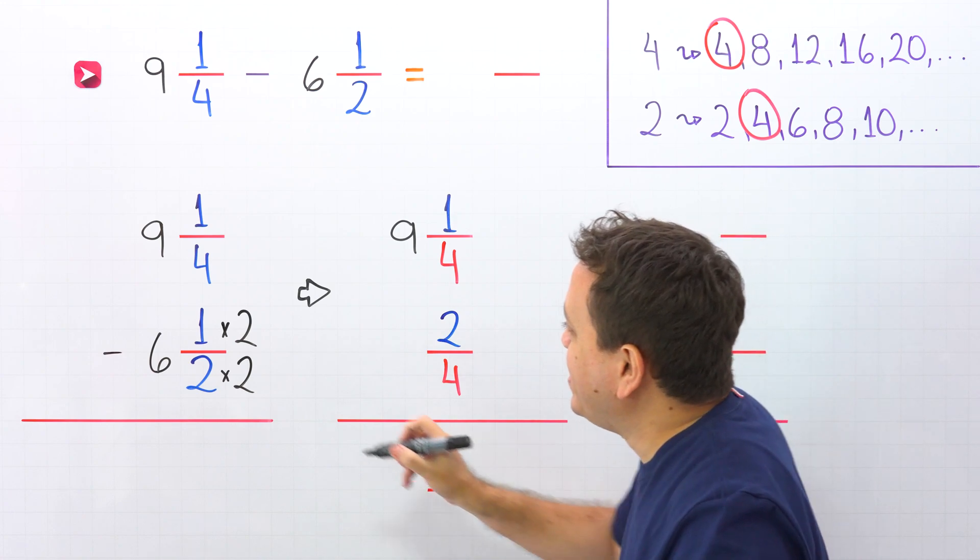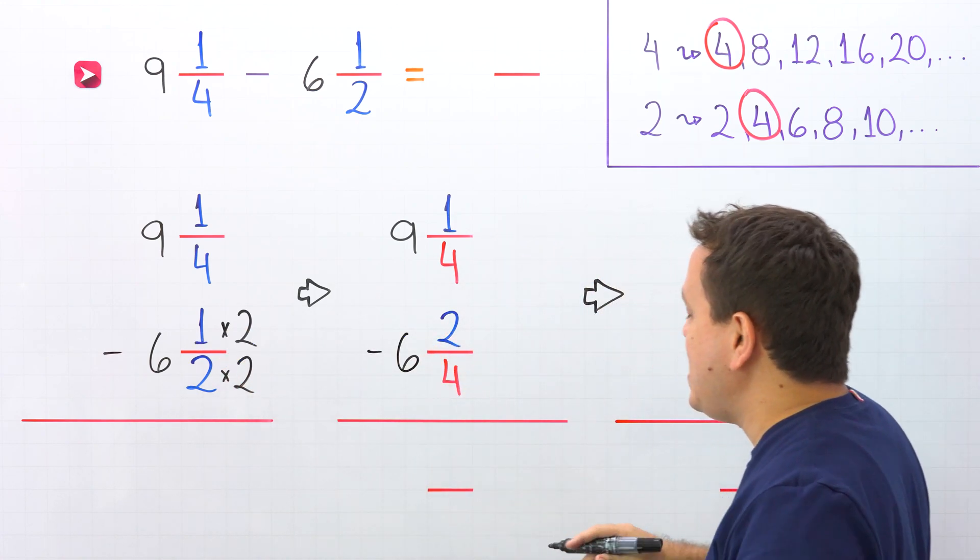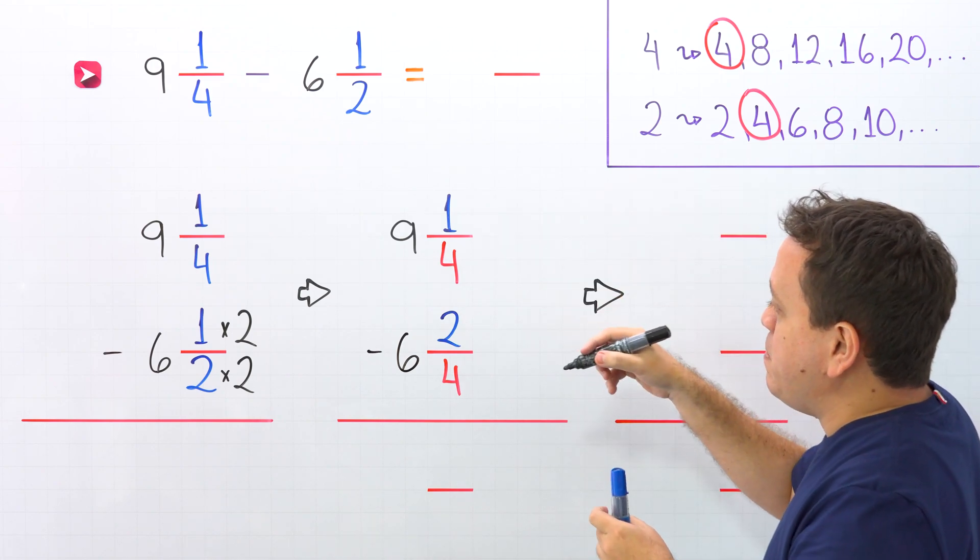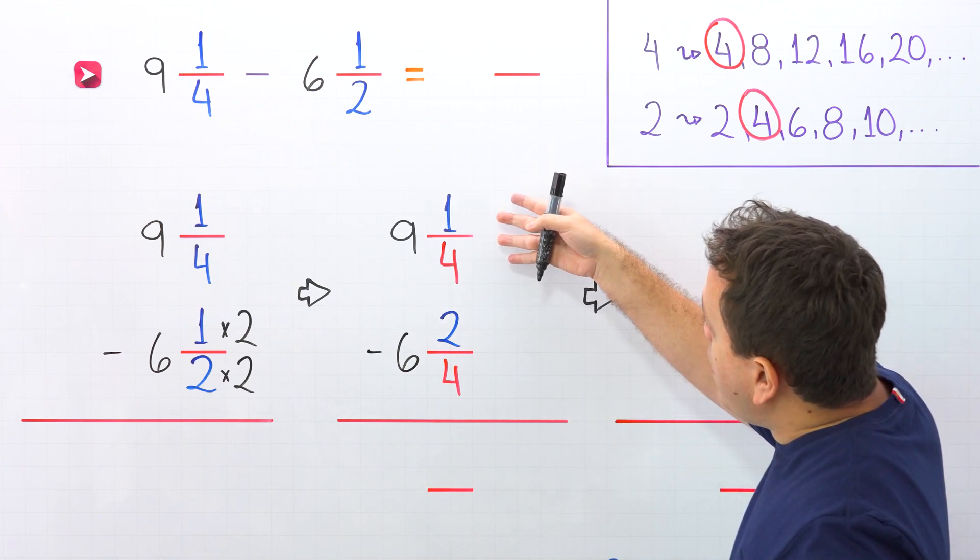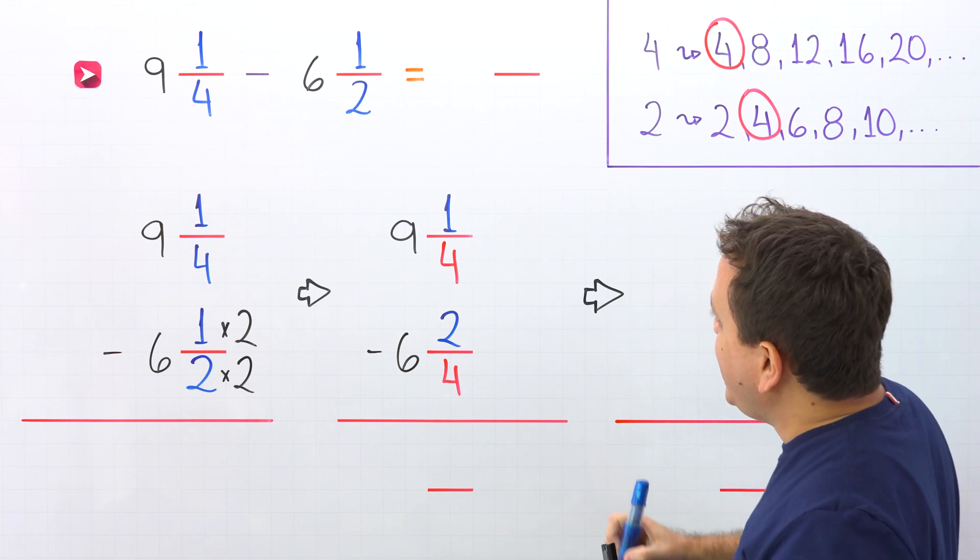They represent the same value. Don't forget the minus sign and the whole number, 6 in this case. One more time, we are going to try to subtract these two mixed numbers. To find the difference, we start by subtracting the fractions. 1 fourth minus 2 fourths.